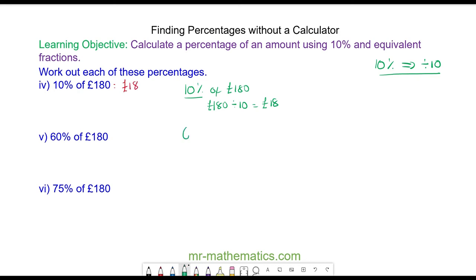For the next one, 60% of £180, we can use 10%, which we already know is £18. We can use the 10% to find 60% by multiplying by 6, and we're doing this to both sides. So 60% is 18 times 6, which is £108.